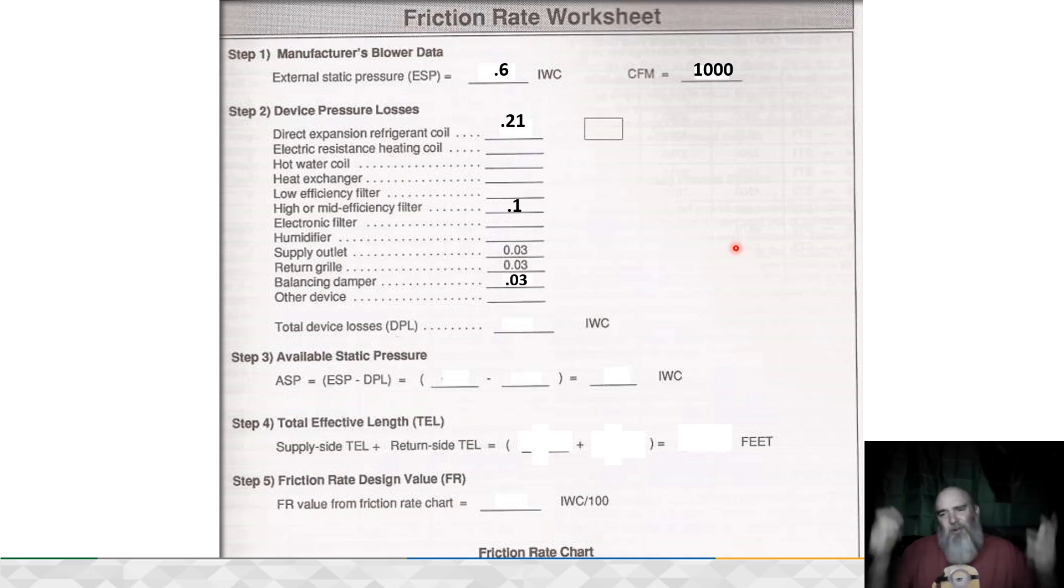A better analogy is if you're working for 30 bucks an hour and at the end of the week the person who's supposed to pay you says, 'Yeah, we're just going to ballpark it, I'll give you 600 bucks'—is that good? No, we want to use actual math to calculate this stuff. So stop the nonsense. The friction rate worksheet is very straightforward. It is the backbone, if you will, of Manual D.